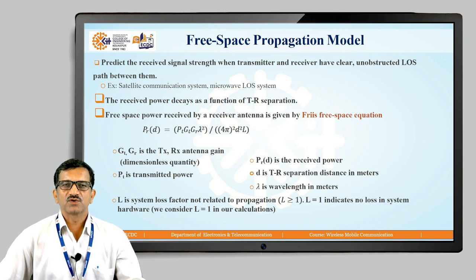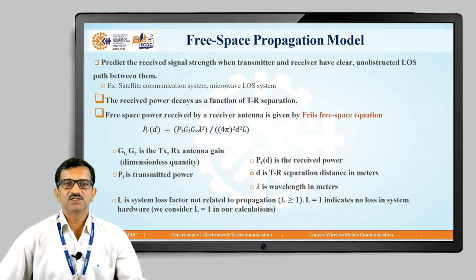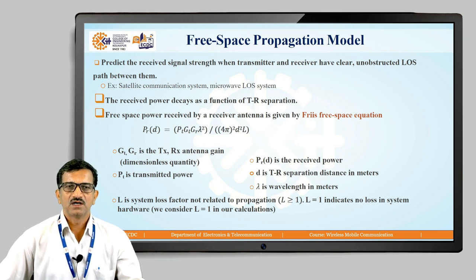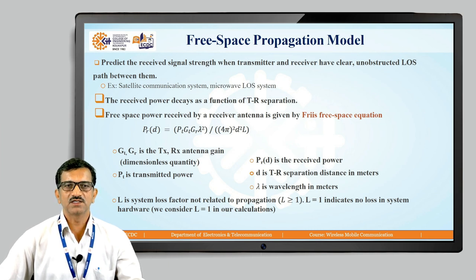In the case of the free space propagation model, the Friis formula is one of the basic things. In the case of the Friis formula, the communication system taken into consideration consists of a transmitter, transmitting antenna, then the distance between the transmitting and receiving antenna, then the receiving antenna and receiver. These are the different parts of the system taken into consideration.